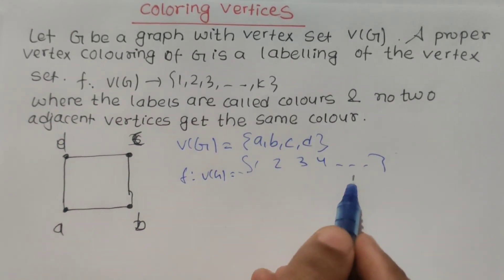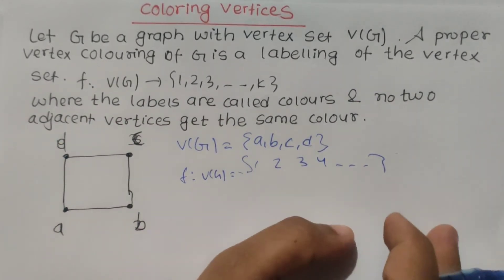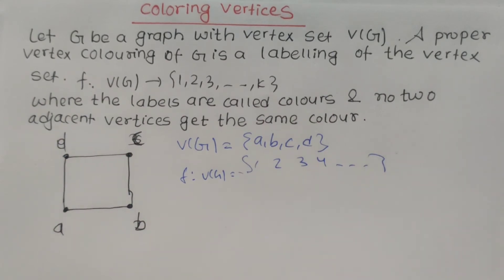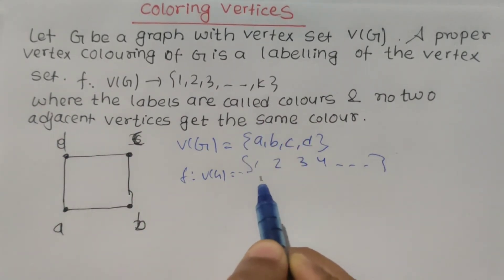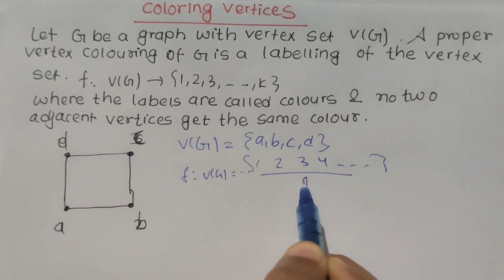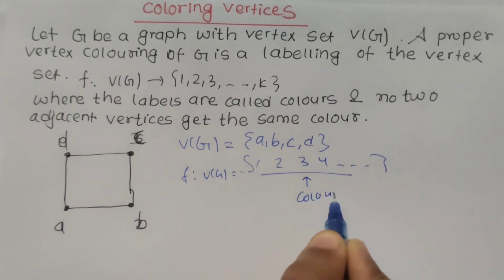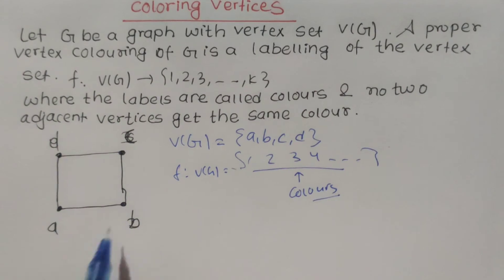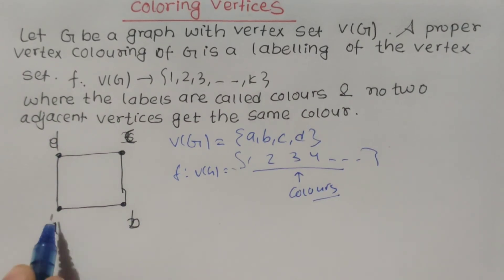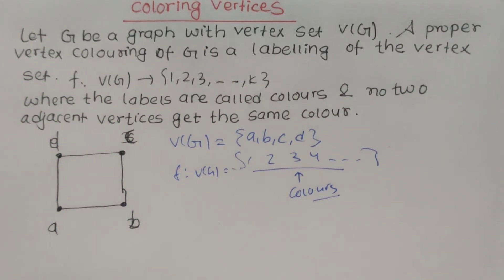We use 1, 2, 3, 4 colors. Where the labels are called colors. And no two adjacent vertices get the same color.